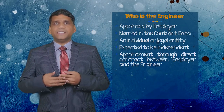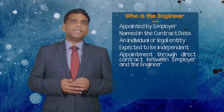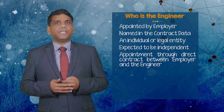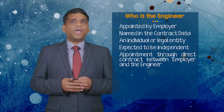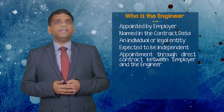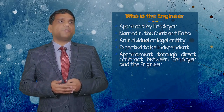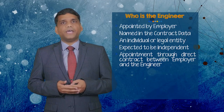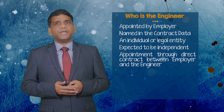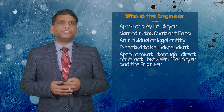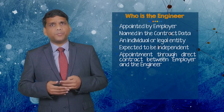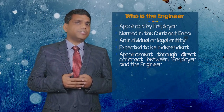Now let us talk about who is the engineer. The definition of the engineer is given in sub-clause 1.1.35. According to it, the engineer is the person appointed by the employer to act as the engineer for the purposes of the contract and named in contract data, or another person appointed from time to time by the employer and notified to the contractor under sub-clause 3.6, replacement of the engineer. These days, generally, the engineer is a company or corporation — a legal entity — as opposed to an individual or natural person.